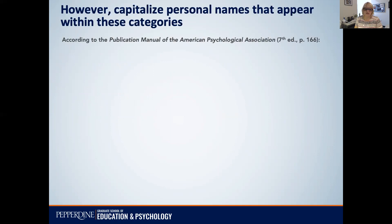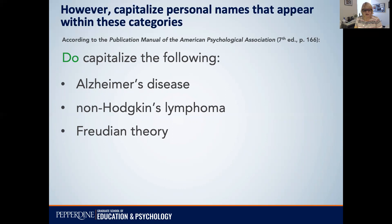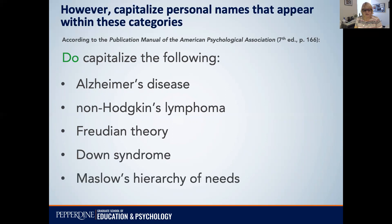However, we do capitalize only one kind of exception, and that is when the name of a person is part of the disease or the theory. So Alzheimer's disease — notice you only capitalize the A, not the D. Non-Hodgkin's lymphoma — so only the H. Freudian theory, Down syndrome, Maslow's hierarchy of needs. You can see that all of these examples have a person's name in them.